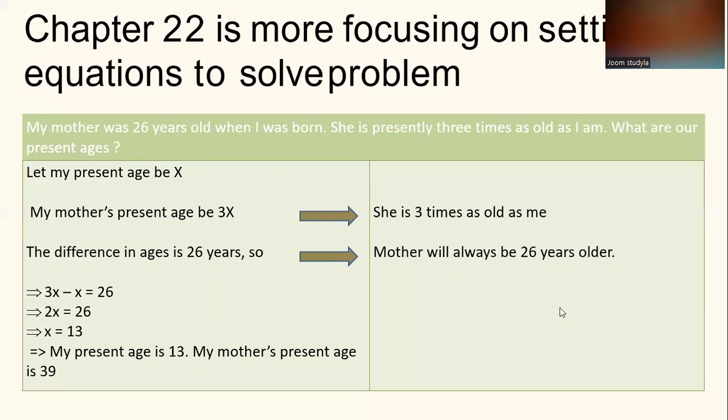Chapter 22 is more focusing on setting up equations to solve problems. Let's look at one of the examples given. My mother was 26 years old when I was born. She is presently three times as old as I am. What are our present ages?